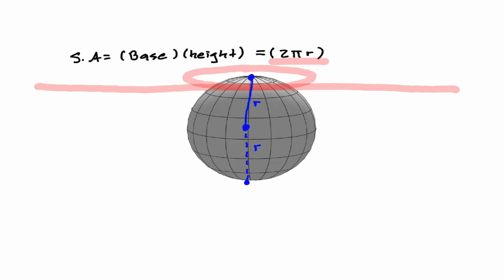So notice that when we go from the upper part all the way to the bottom part of the sphere, that is equivalent to two times the radius of the sphere, 2r.